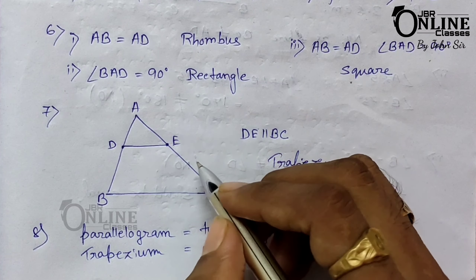Number eight: how does a trapezium differ from a parallelogram? In a parallelogram there are two pairs of opposite parallel sides, but in a trapezium there is only one pair of opposite parallel sides.